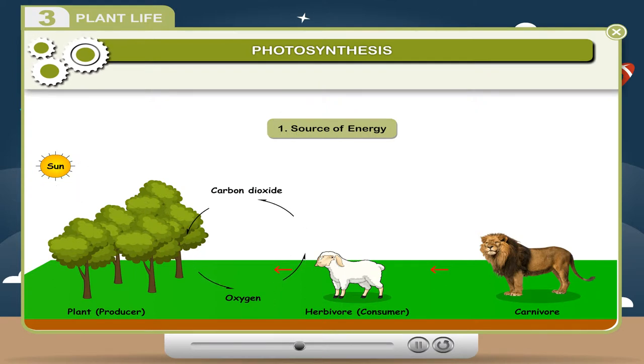1. Source of Energy: Photosynthesis is the only mechanism by which energy from the non-living world, sun, is transferred to the living world, plant. 2. Source of Food: Photosynthesis is the only and ultimate source of food for all.